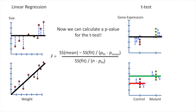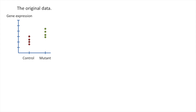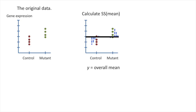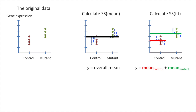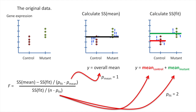Now we can calculate a p-value for the t-test. Let's review what we've done so far. Here's the original data — gene expression for control mice and mutant mice. The first thing we did is we calculated the sum of squares of the residuals around the overall mean. Then we calculated the sum of squares of the residuals around the fit. In order to do this with a single equation, we had to create a design matrix. Once we've calculated the sums of squares, all we have to do is plug the values into the equation for F and then we'll get our p-value.